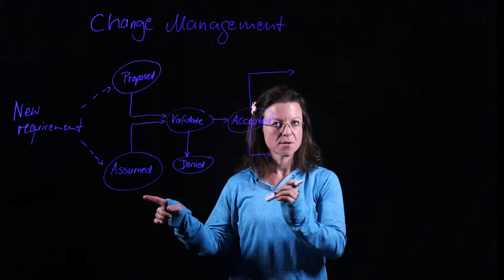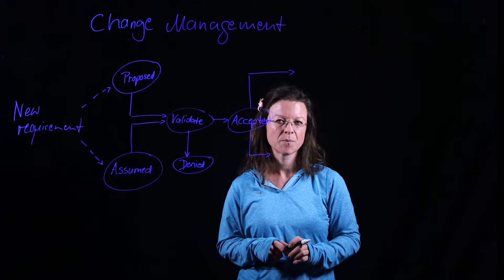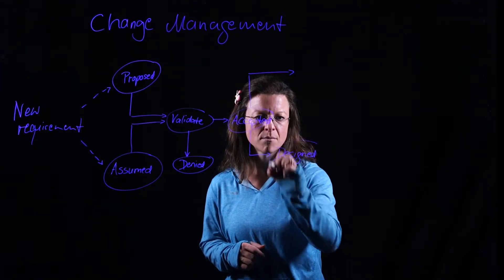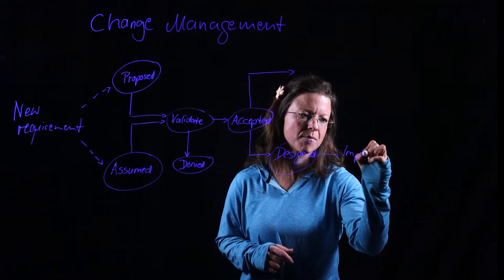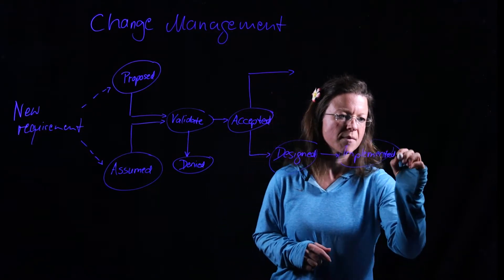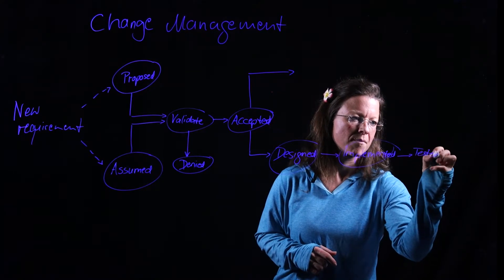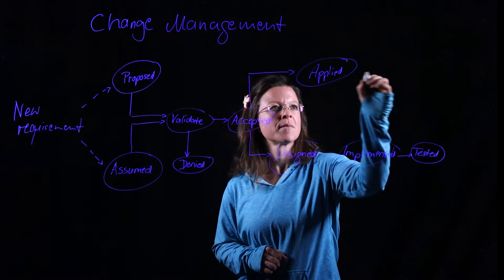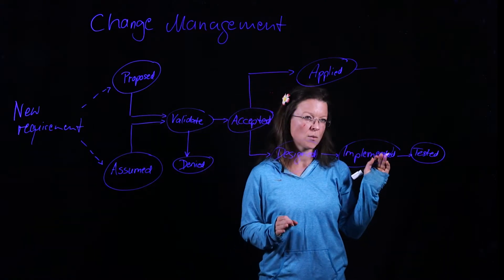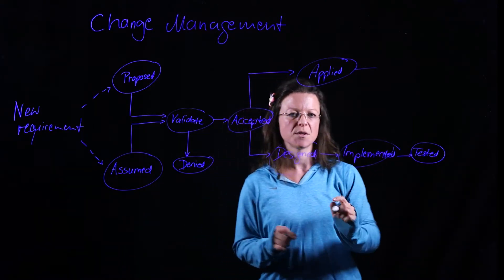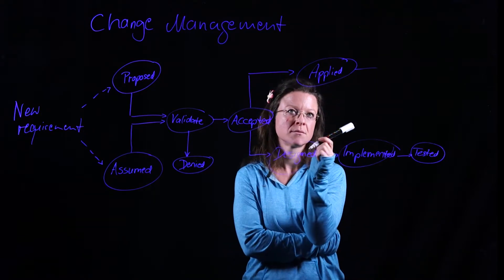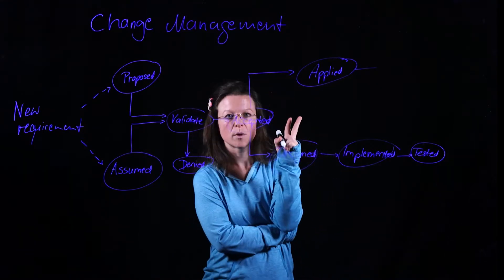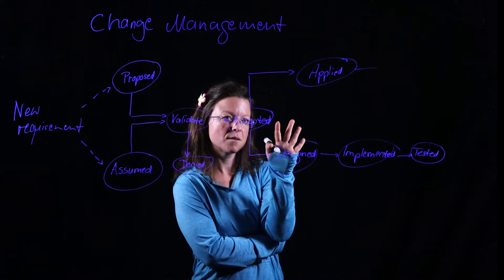If you think back to the types of requirements that we had, we have one route that says designed, implemented, and tested, and we have another route that just says applied. So what do you think? Which types of requirements go this route and which requirements go that route? Take a moment to reflect. We had the functional requirements, quality requirements, process requirements, and system constraints.